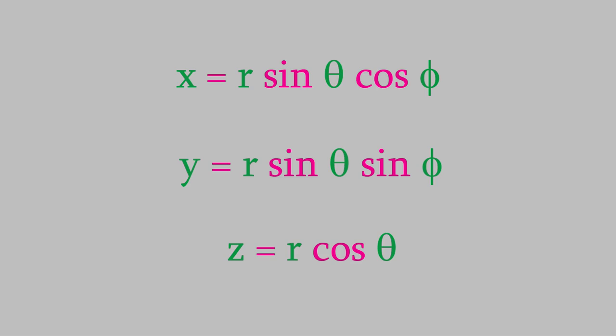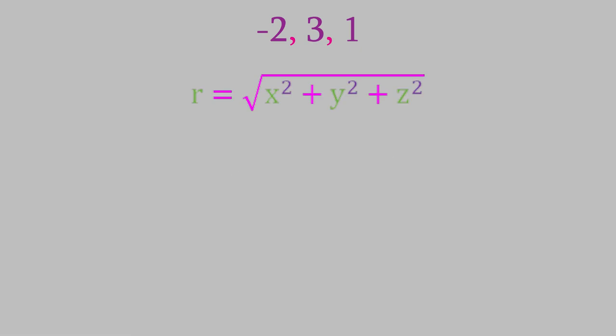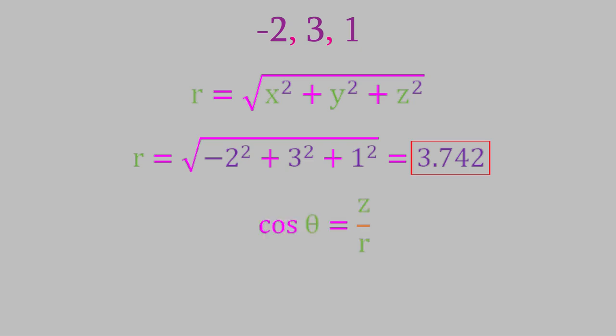Let's try an example. Suppose we're interested in a point located at coordinates negative 2, 3, and 1 in Cartesian coordinates. What would be the position in spherical coordinates? We'll use these equations. For r, we have the square root of negative 2 squared plus 3 squared plus 1 squared, which gives us about 3.742. If we plug the coordinates into our equation for theta, we find that the cosine of theta is equal to 0.2673. That makes theta equal to 1.300.